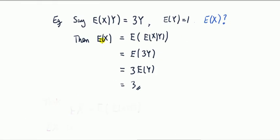So, a quick example, say I got two random variables. I know I want the mean of x. I know the conditional mean of x, given y, is 3y.